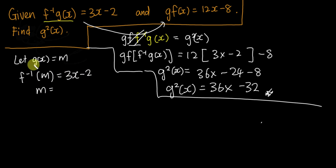So m equals f(3x minus 2). From here, this is m, right? Just like I said, m equals g(x). That means if I want to get the g squared, I can try to get it from the other equation I have, g∘f(x) here.